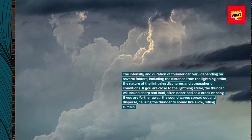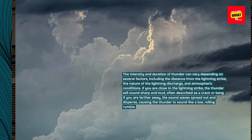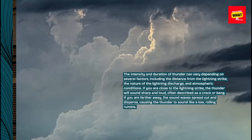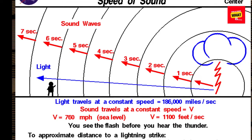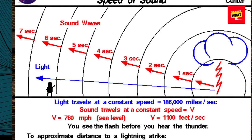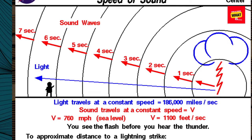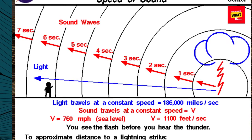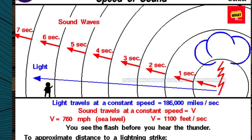If you are farther away, the sound waves spread out and disperse, causing the thunder to sound like a low, rolling rumble. The time delay between seeing the lightning flash and hearing the thunder can be used to estimate the distance of the lightning strike.